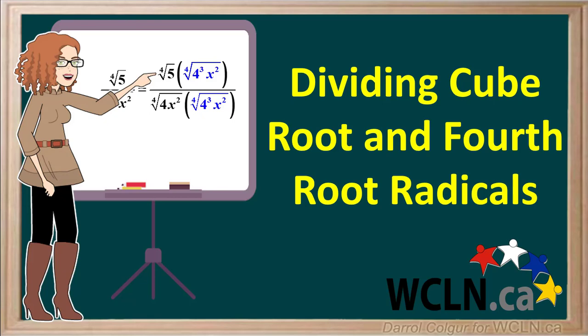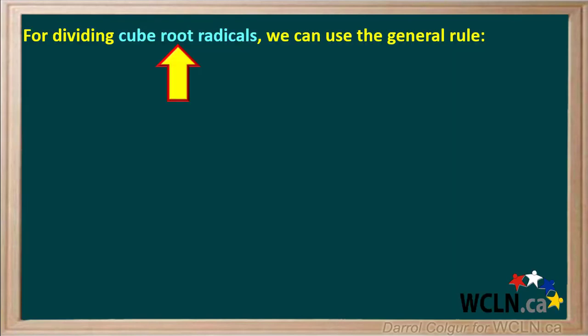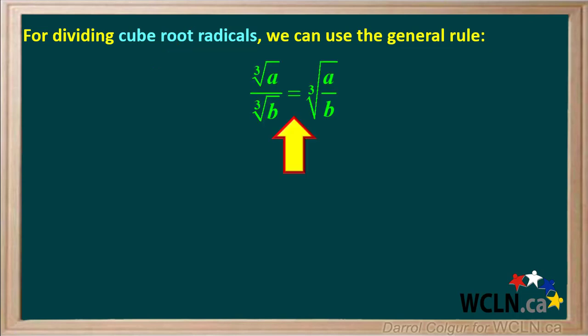Cube root and fourth root radicals can be divided the same way square root radicals can. For dividing cube root radicals, we can use the general rule: the cube root of A divided by the cube root of B equals the cube root of A divided by B.